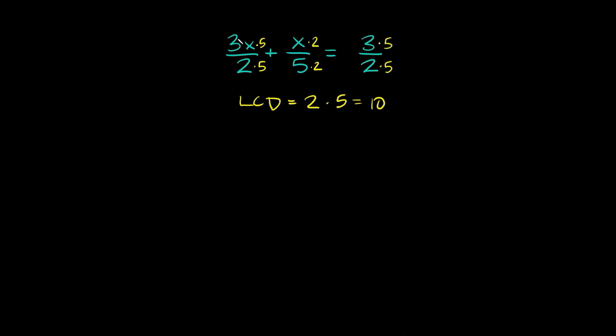So if we multiply all this out on top over here 3x times 5 is 15x, right? So 15x over 10 plus 2x over 10 is equal to 15 over 10.